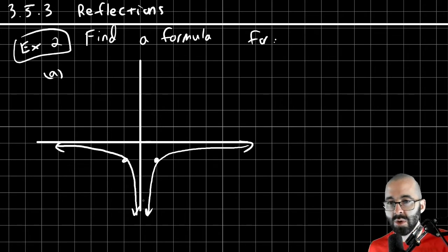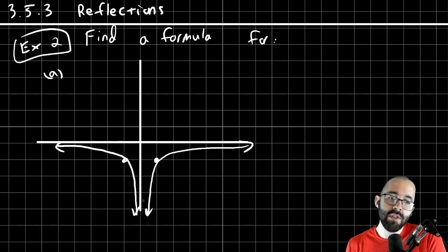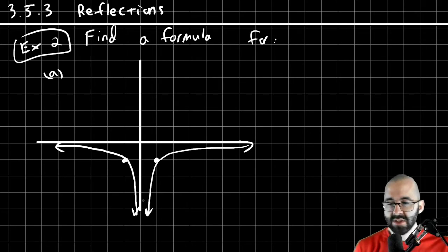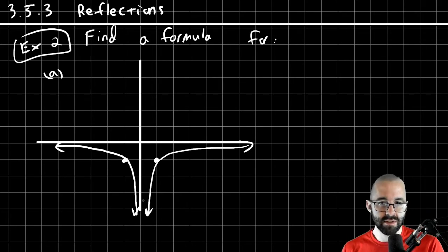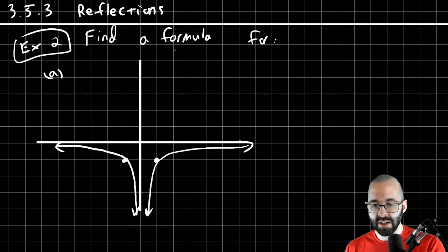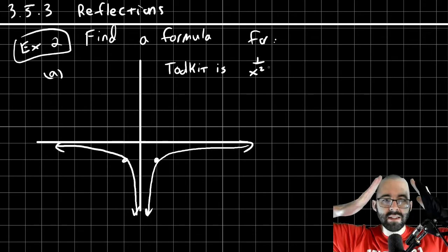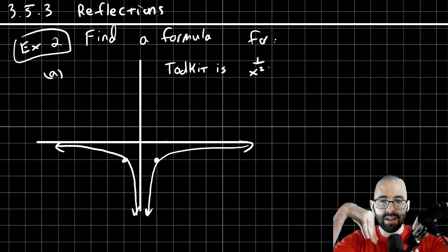So let's look at passes through these points. And it looks like this. So first, you have to identify the toolkit function. And then you have to identify what is being done to it. So hopefully, if you look at your toolkit functions, you're going to see that the toolkit function here is the reciprocal squared function. One over x squared.